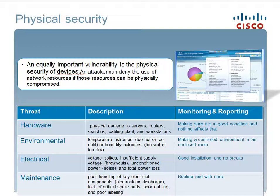Environmental threats include temperature extremes — too hot or too cold — and humidity extremes — too wet or too dry. This is best controlled by having servers and equipment in a controlled environment, such as an enclosed room with environmental controls.